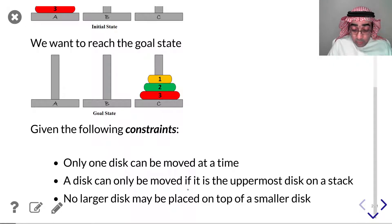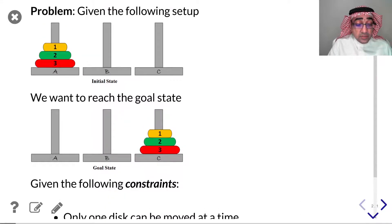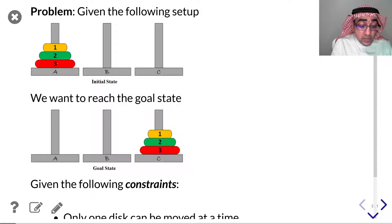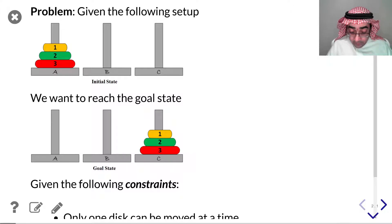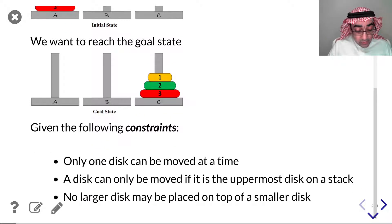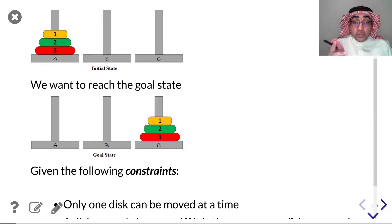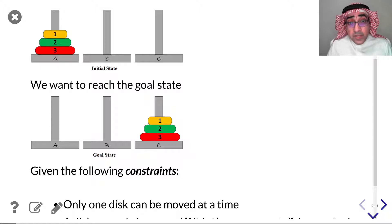A disk can only be moved if it is the upper disk on a stack — that is the second constraint. We can only move the topmost disk on the stack, so we cannot move disk number three or two; we can only move disk number one. The third constraint is that no larger disk may be placed on top of a smaller disk, so we cannot place disk number three on top of disk number two, or disk number two on top of disk number one.